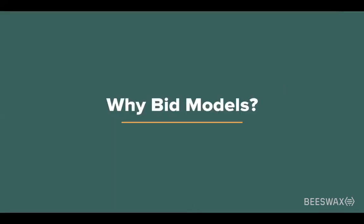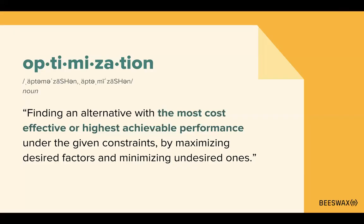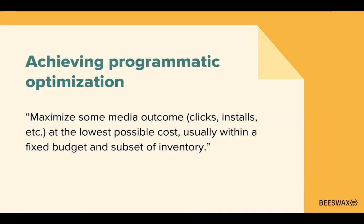Let's talk about why we're here by doing a high-level overview of what we're trying to achieve. What we're really trying to achieve is optimization — maximizing some metric while minimizing or keeping something else constant. Specifically in programmatic, the thing we're trying to maximize is usually clicks or installs, or maybe unique reach depending on the use case. And the thing we're keeping constant or minimizing is obviously our media cost, or maybe constraints around budget or specific inventory types.